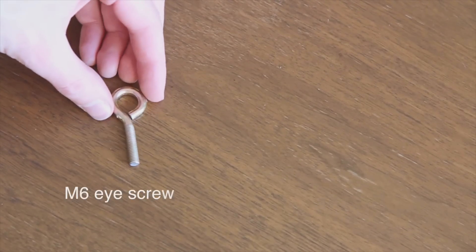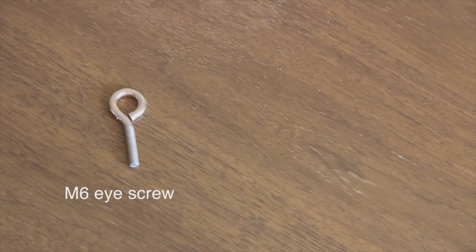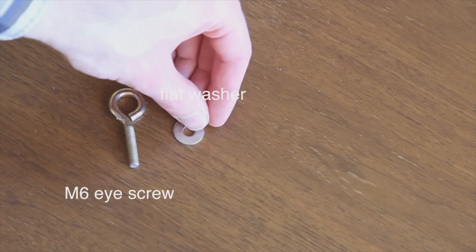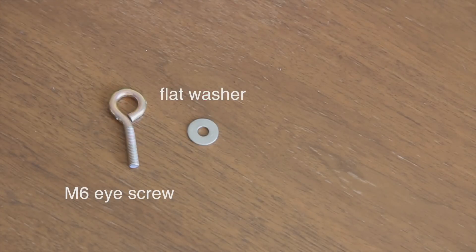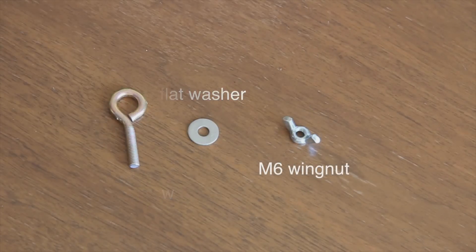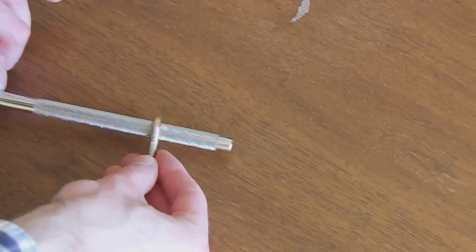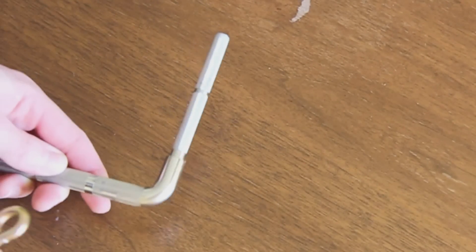We need to buy an M6 eye screw, a convenient flat washer, and an M6 wing nut. Make sure the eye screw is big enough to fit on the L-rod you are using.